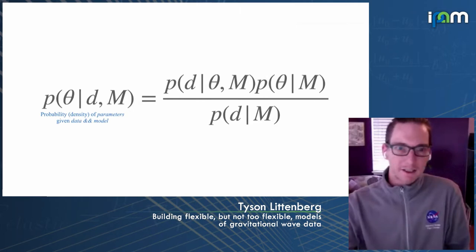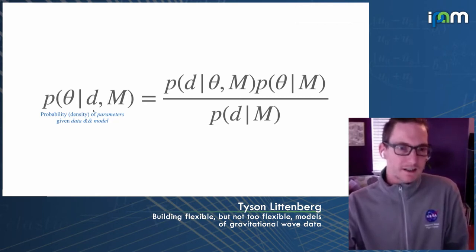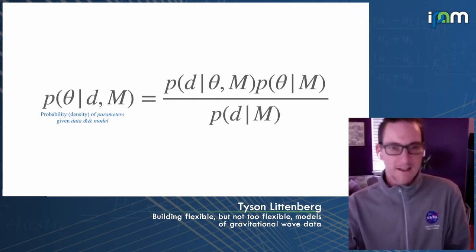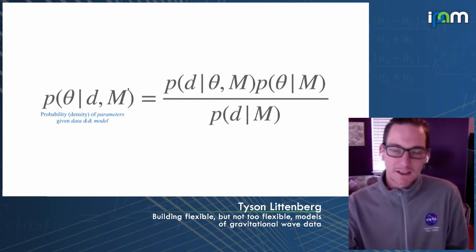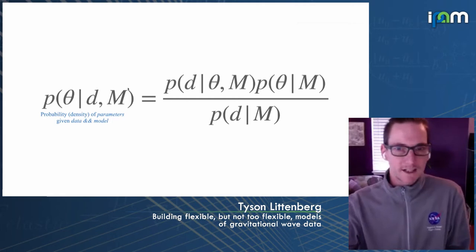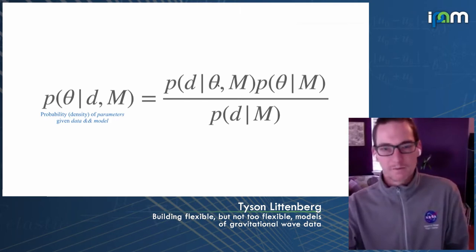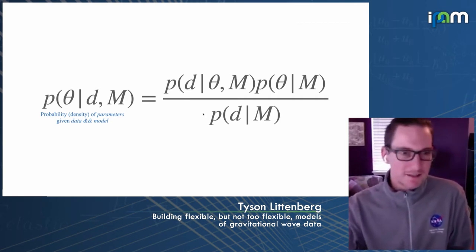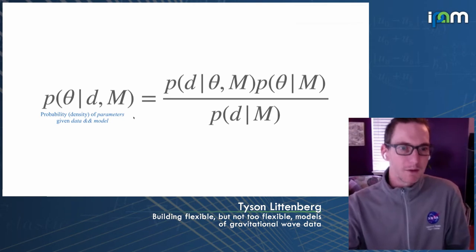In the context of parameter estimation, the thing you want to know about are your model parameters, represented with theta. Those parameters are conditional on the data you've observed and also your model for the data. Oftentimes folks leave out the condition on the model because it shows up in every term and is redundant, but the different pieces of Bayes' theorem are the likelihood function, the prior, the evidence, and the posterior probability density for your model parameters.